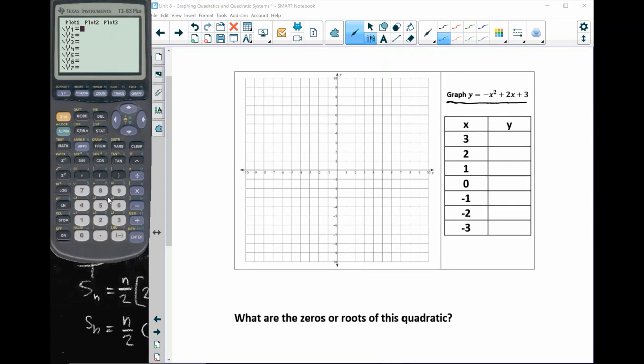Okay, then I'm just going to enter my equation. So I pressed the negative button to give me a negative. Then I need to press the x t theta n button to give me a variable x. Then I'm going to square that. Now I'm going to type plus 2 x t theta n to give me another x plus 3. Now I have put my equation into the graphing calculator.